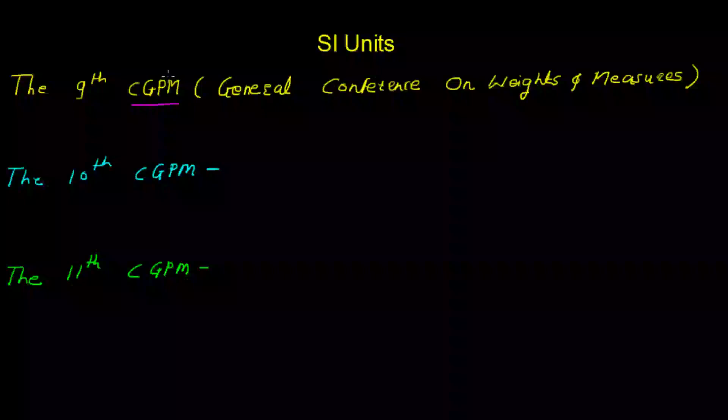This video gives a brief account of the historical development of the international system and the seven fundamental SI units. The 9th General Conference on Weights and Measures was abbreviated as CGPM.